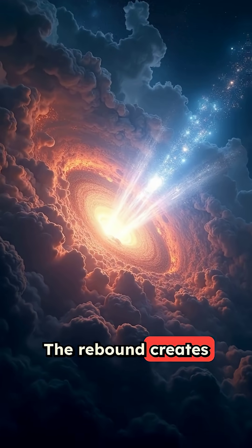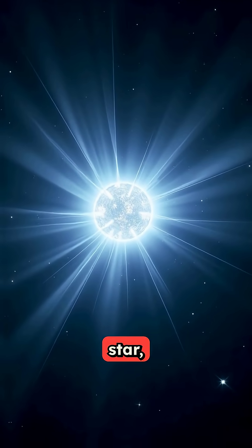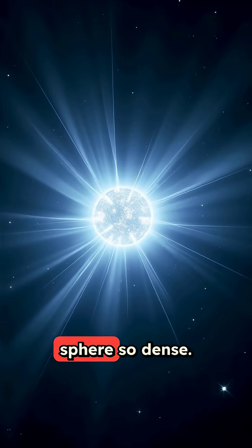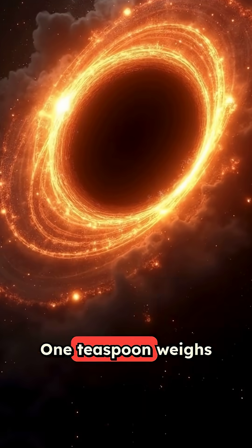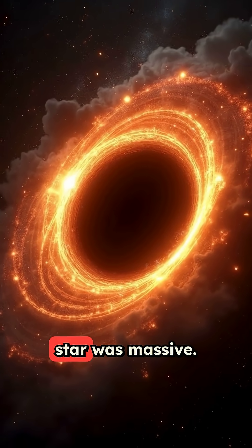The rebound creates a shockwave that tears the entire star apart. What's left behind is a neutron star, a city-sized sphere so dense one teaspoon weighs billions of tons, or a black hole if the star was massive enough.